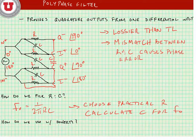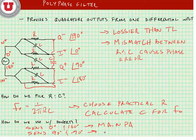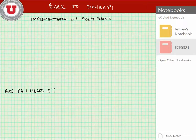How do we use this in a Doherty power amplifier? We can send the zero degrees and 180 degree signal to differential inputs of our main PA, and we send our 90 degrees and minus 90 degrees to the differential inputs of our auxiliary PA.